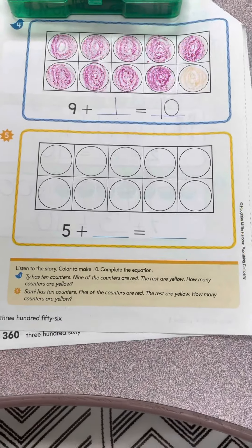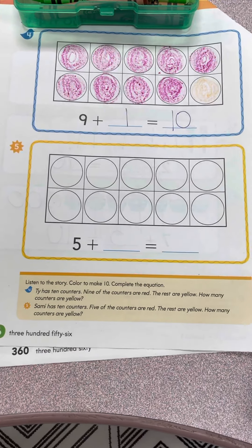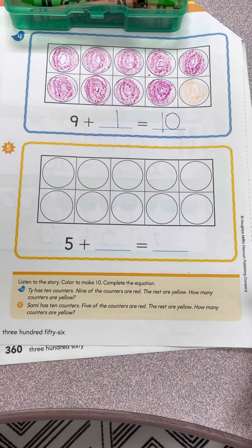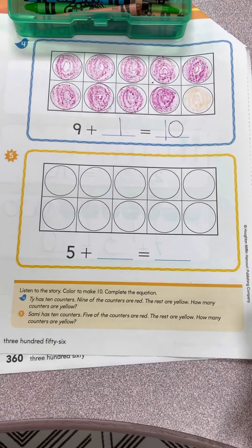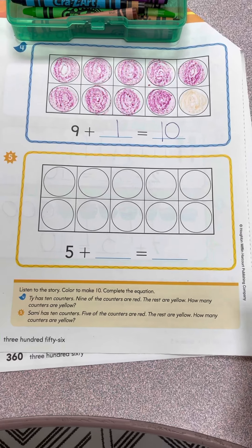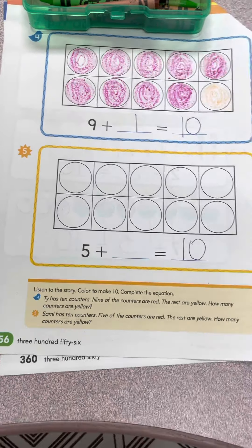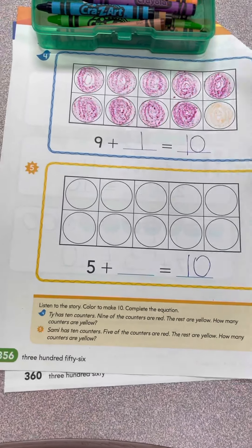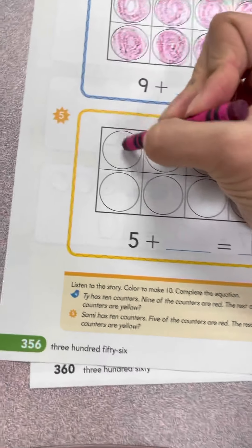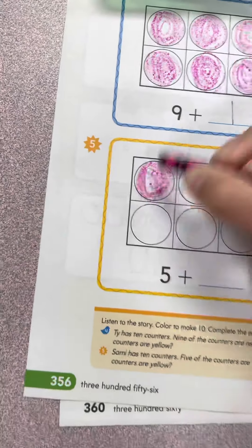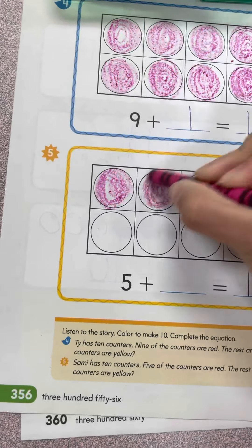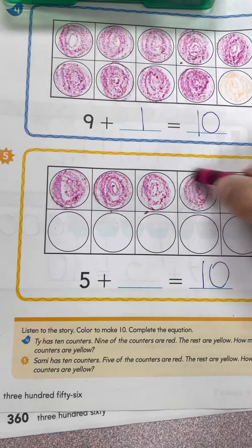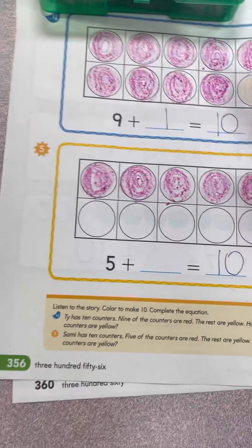Listen to the story. Color to make 10. Complete the equation. Sammy has 10 counters. 5 of the counters are red. Ready? Let's color them red: 1, 2, 3, 4, 5.